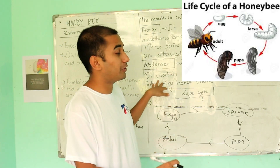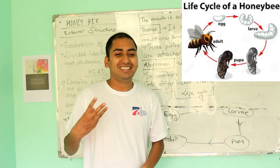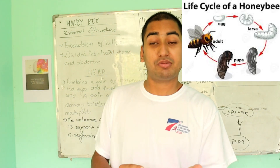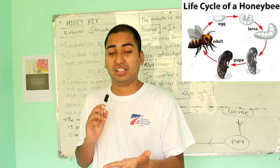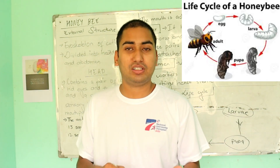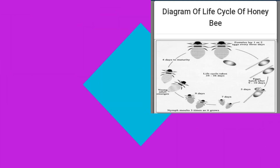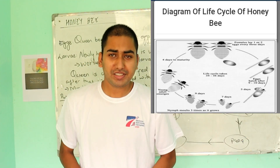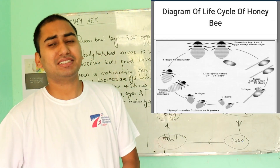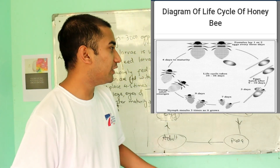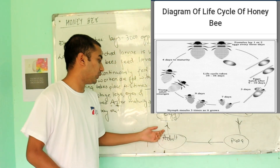Especially in the honeybee's case, there are 3 castes or classes: the queen, the worker, and the drone.